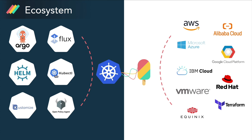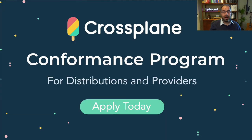Our approach has us generating Crossplane providers from their backend SDKs, and we are doing that successfully right now with AWS and Azure, with more coming on the way. Vendors like IBM Cloud have authored their own native Crossplane providers and are maintaining them. Finally, we've recently added support to generate Crossplane providers from Terraform providers, bringing the entire Terraform ecosystem to Crossplane. To ensure the ecosystem remains healthy as it grows, the Crossplane community has applied to start a conformance program for Crossplane.